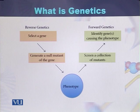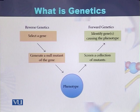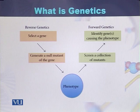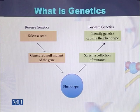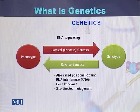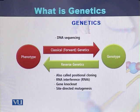In forward genetics, a geneticist or researcher first identifies the phenotype, then based on the phenotype, certain mutants or genes are screened, and ultimately a particular gene is identified that is responsible for a specific phenotype. So there are two ways of studying genetics: reverse genetics and forward genetics. Studying genotype based on phenotype is called classical genetics or forward genetics.